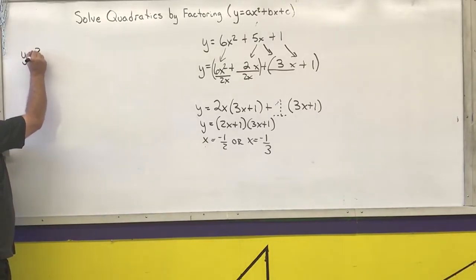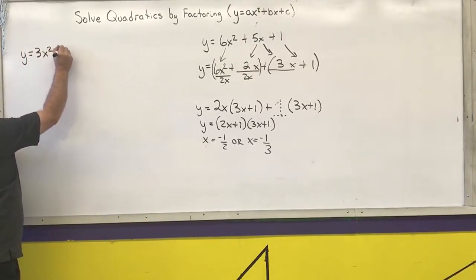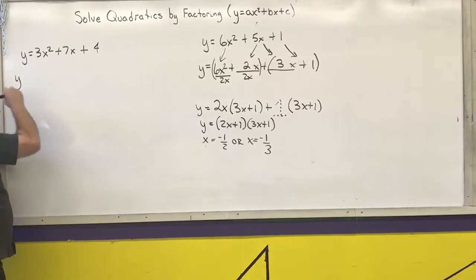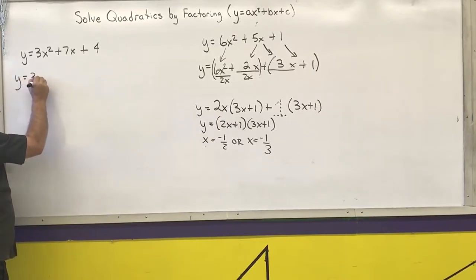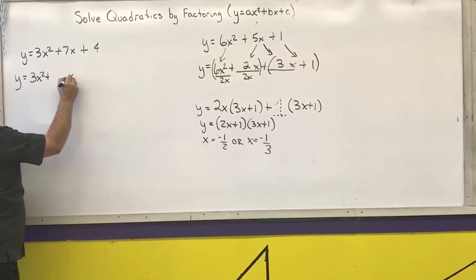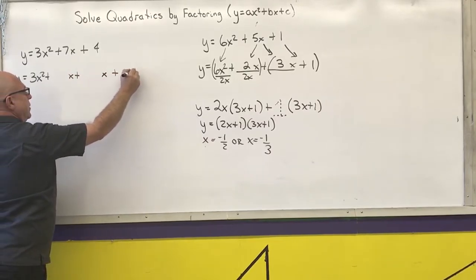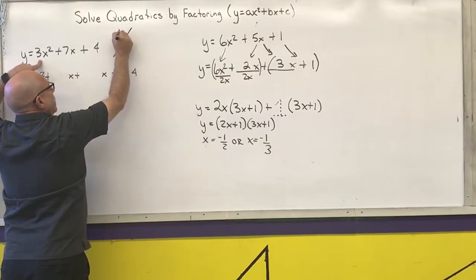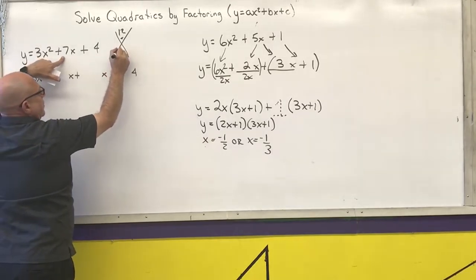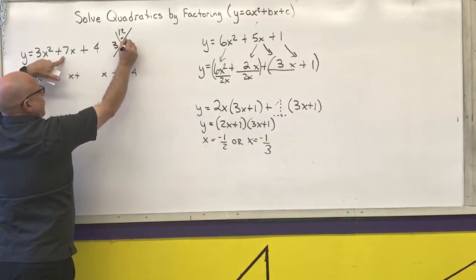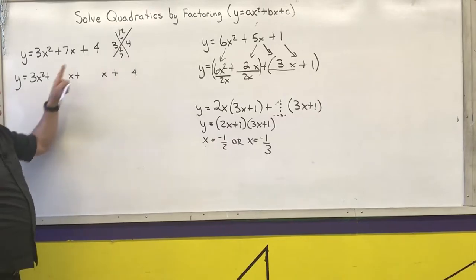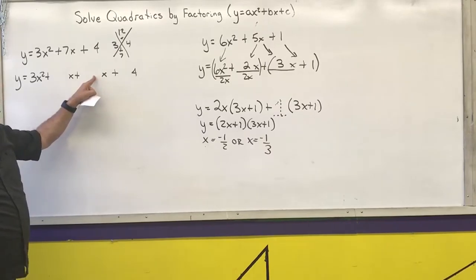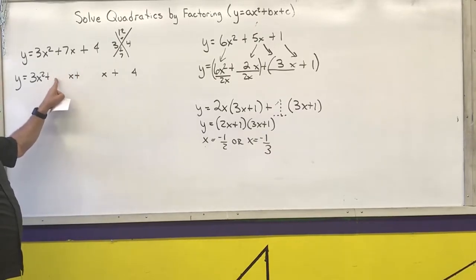Next example: y equals 3x squared plus 7x plus 4. I always do my setup first before even thinking about the multiplying. Now I need two numbers that multiply to 12 — first times last — that add to 7. That is 3 and 4. Notice the 3 can match this 3, and the 4 can match that 4. You can get the same answer by putting the 4 here and the 3 there, but make your life easier and put the 3 with the 3 and the 4 with the 4.